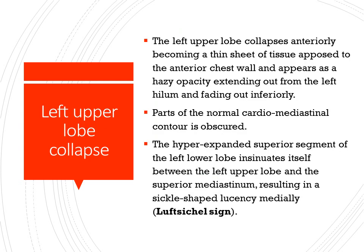Left upper lobe collapse is slightly different when compared to right upper lobe collapse. It collapses anteriorly, becoming a thin sheet of tissue opposed to the anterior chest wall, and appears as a hazy opacity extending out from the left hilum and fading out inferiorly. Part of the normal cardiomediastinal contour is obscured. The hyperexpanded superior segment of the left lower lobe insinuates itself between the left upper lobe and the superior mediastinum, resulting in a sickle-shaped lucency medially, which is called the Luftsichel Sign.